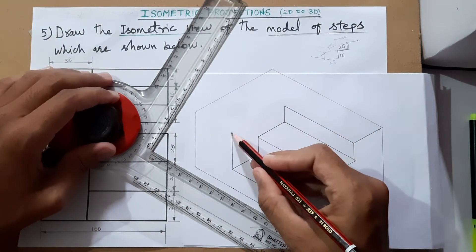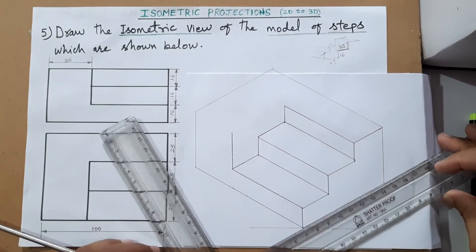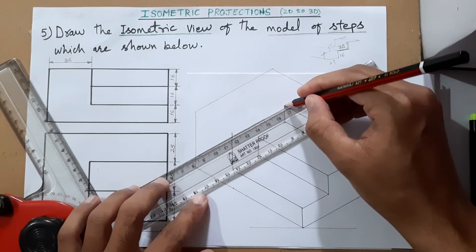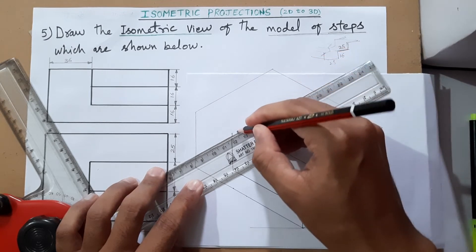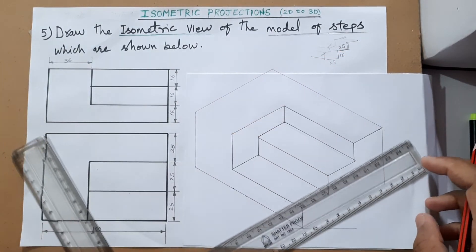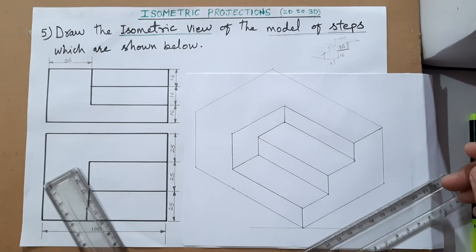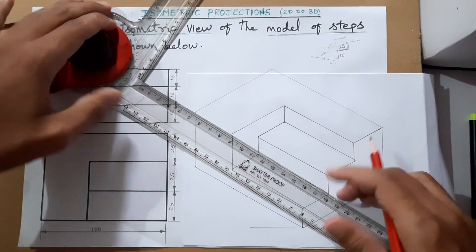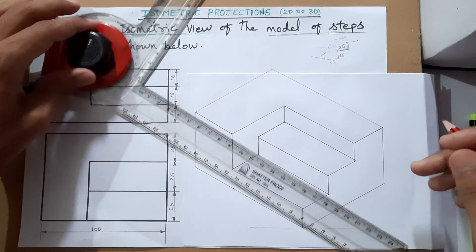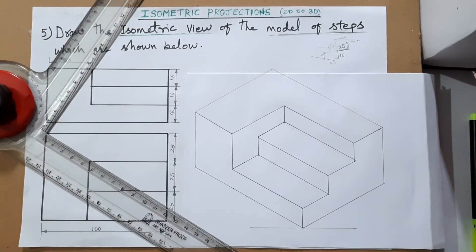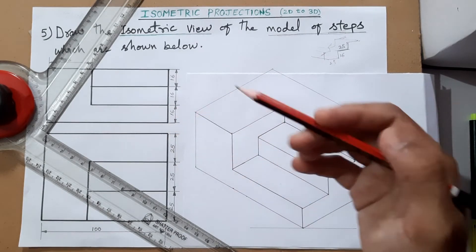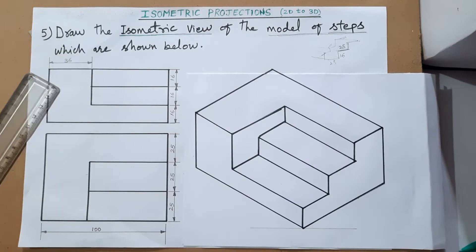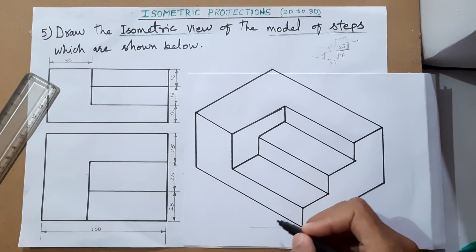Now join these two points — again these two points are parallel to this. So now whatever visible lines are there, that is what we have drawn. Now we will draw the final view by making the visible edges darker. Darker lines mean visible edges will be dark like this. I will make it dark and then we will see the final diagram.